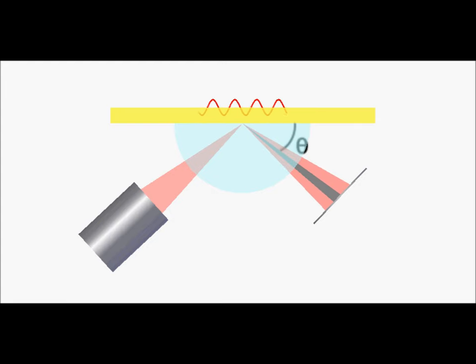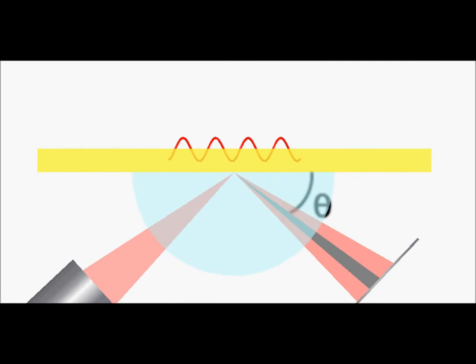At a certain incident angle, known as the resonance angle, light is absorbed by the electrons in the metal film of the sensor chip, causing them to resonate. These resonating electrons are also known as surface plasmons, which are sensitive to the surrounding environment.